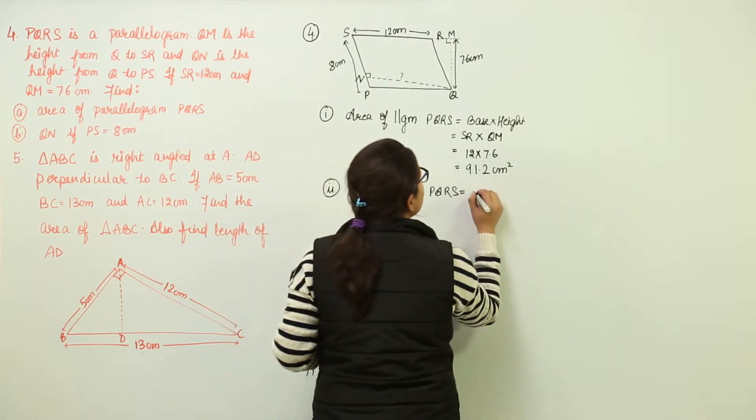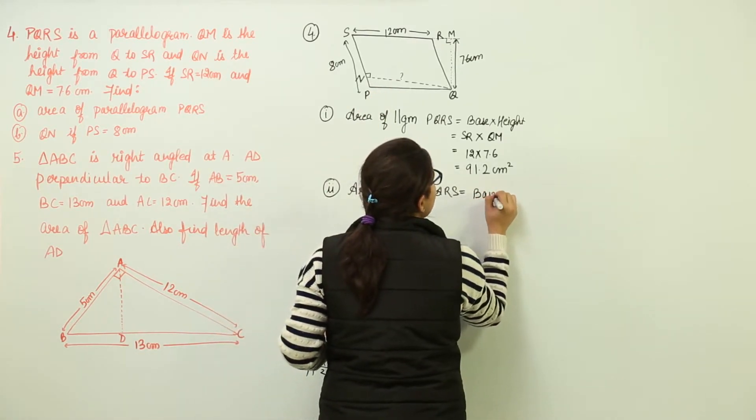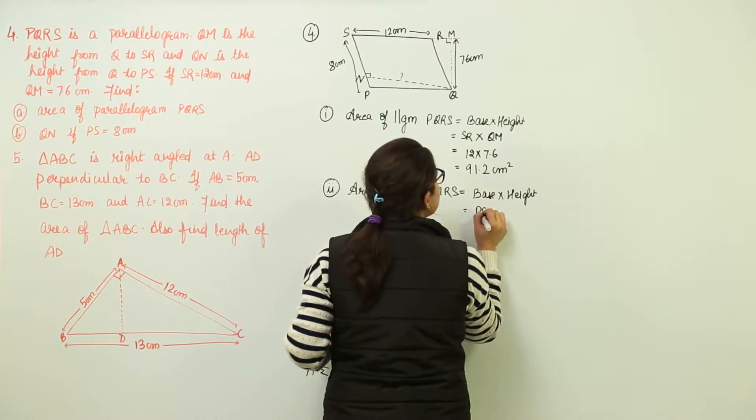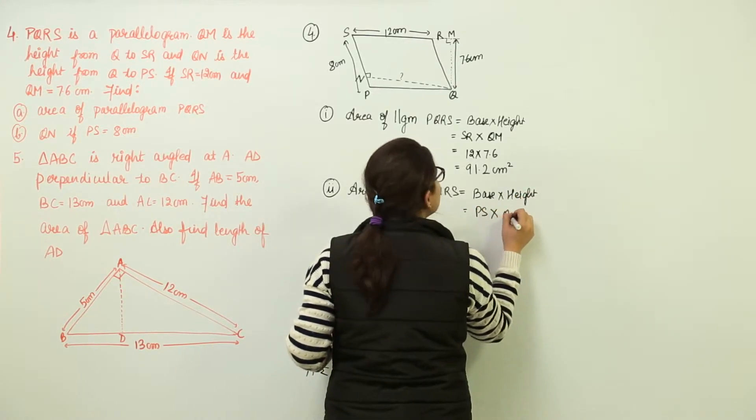Now you can write this as base into height only, where base has changed to PS and the respective height would be QN.